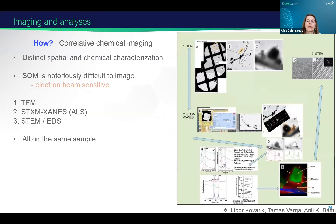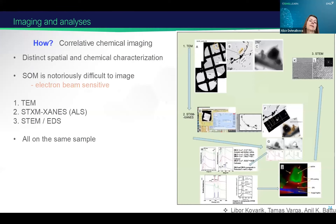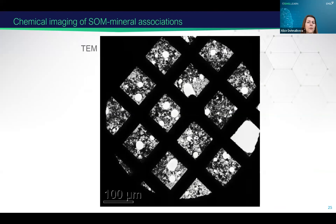Now we are at the imaging. We did correlated chemical imaging — we did all different electron microscopies, also X-ray microscopy. We didn't just take the picture, but we also analyzed what's on the organic matter on the same sample. This is how it looks when we look at the soil sample, and some of you might see a microbe here.